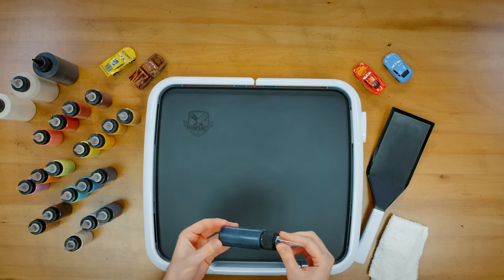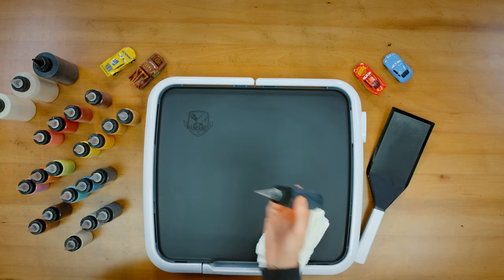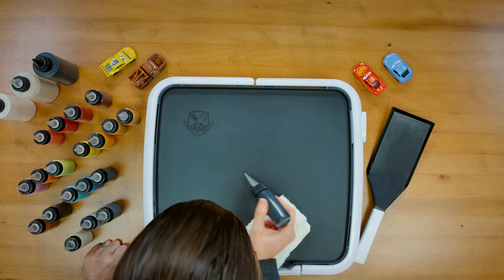We're gonna start with pancake batter which we've got contained in these plastic squeeze bottles all of which contain a drop or two of food coloring gel. He's got those aerodynamic curves. We're gonna start on the hood of the car.